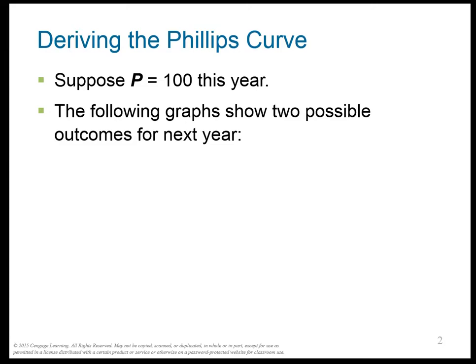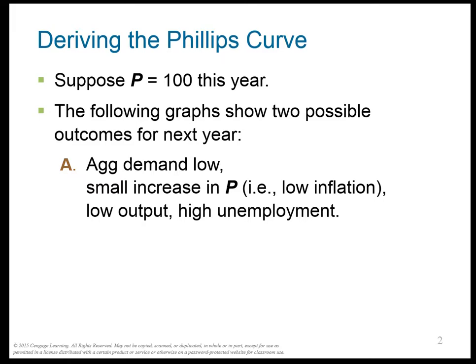Let's suppose the price level is 100 this year — that's the CPI. There are two possible outcomes for next year. One: aggregate demand is low, the economy is kind of a bust. That will lead to a small increase in price, meaning low inflation and high unemployment. When GDP goes down, firms are small and laying off people, which makes unemployment rise. Any time we have reducing Y, we get high unemployment.